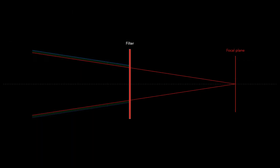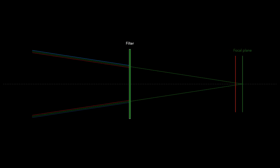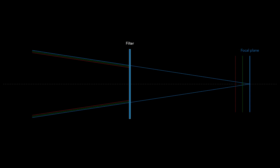Now let's see what happens when we switch between various Parfocal color filters using a budget refractor. As you can see, the fact that each color has a different focal plane to begin with will cause even Parfocal filters to incur an offset. And to compensate for that offset and obtain the highest level of sharpness, all you need to do is refocus the imaging train upon switching filters.